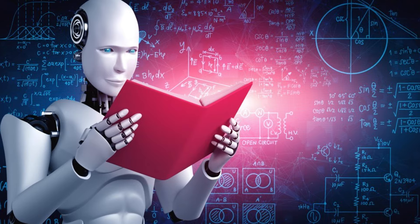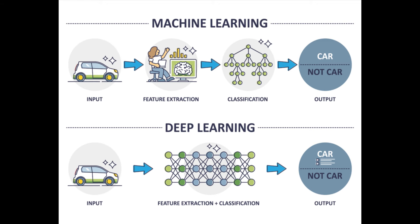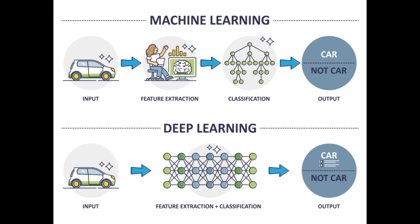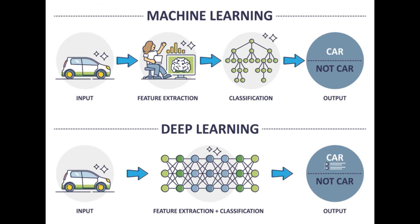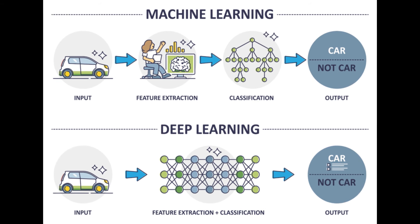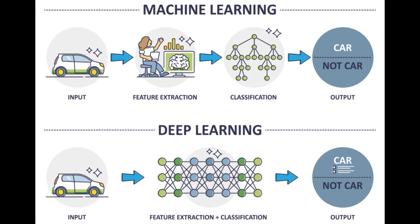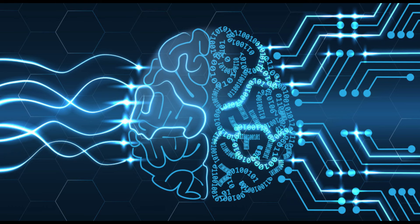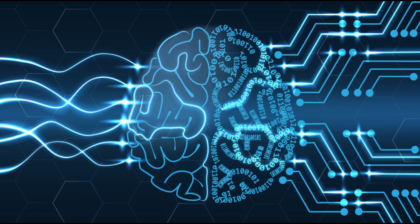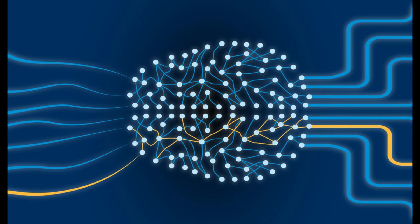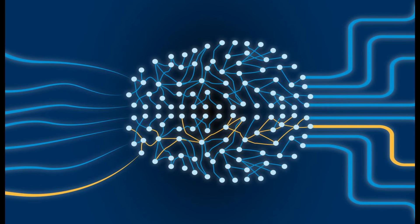The fourth stage is deep learning. Deep learning, a subset of machine learning, experienced a resurgence in the 2010s, fueled by advances in computational power and large datasets. Deep neural networks, with multiple layers, demonstrated superior performance in tasks like image and speech recognition.